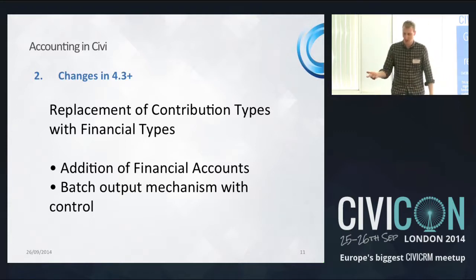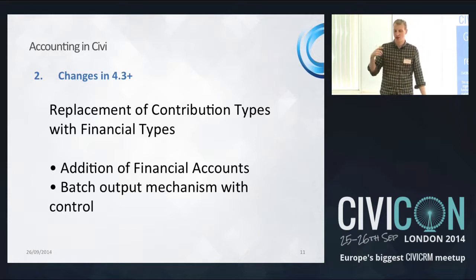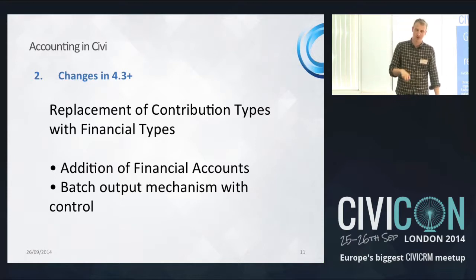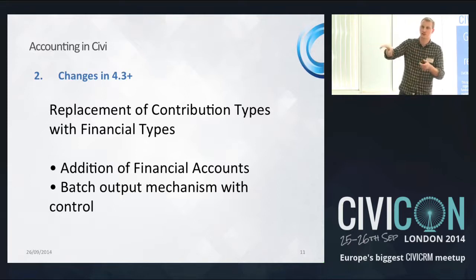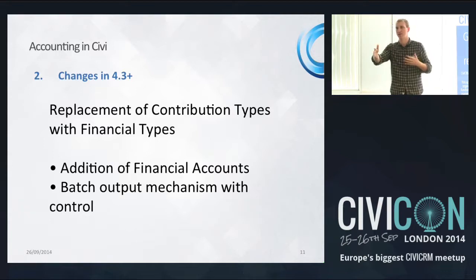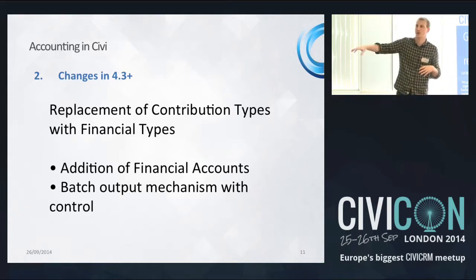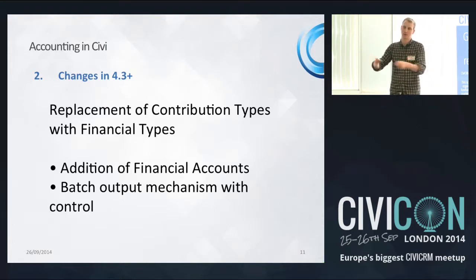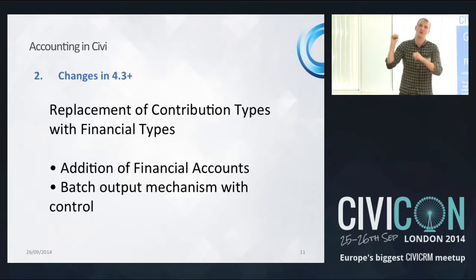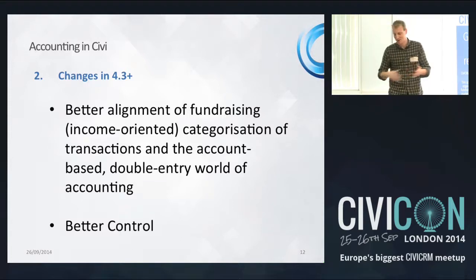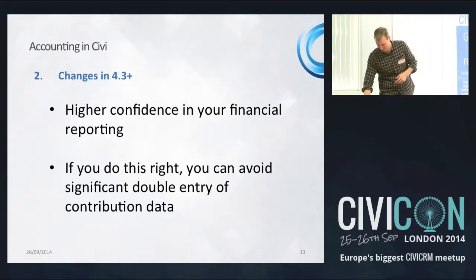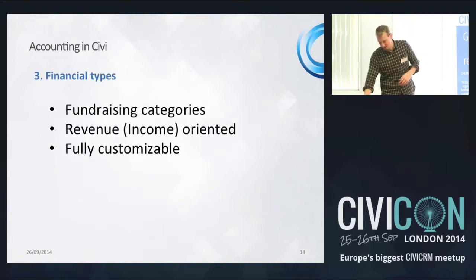We replaced contribution types with financial types, and also added the idea of a financial account and a batch output mechanism for control. When somebody purchases something, that money goes into a financial account based on rules you set up. You then have a method of getting that data out — for example, into a revenue account with code 1000 — and exporting it to your accounting system in a batch.